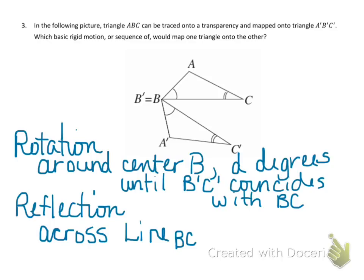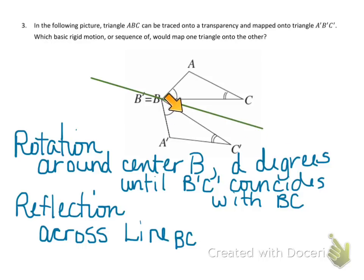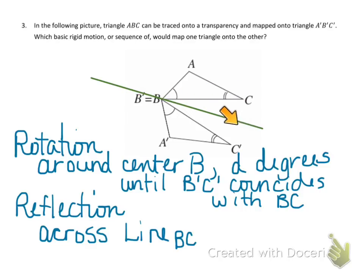You might notice that a single reflection would also map one triangle onto the other. If I draw a line that bisects angle CBC', I could reflect across that line and the two triangles would map together. However, describing that line is tricky — I have no named point to define it. If I do the rotation first, I know the line is simply the line containing B and C, which is much easier to describe.